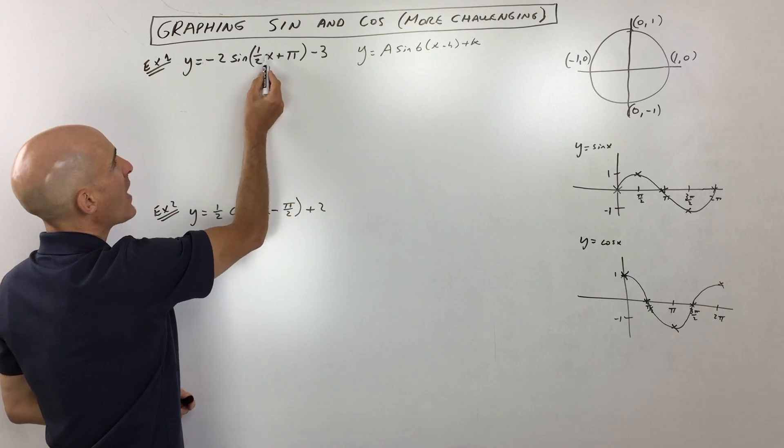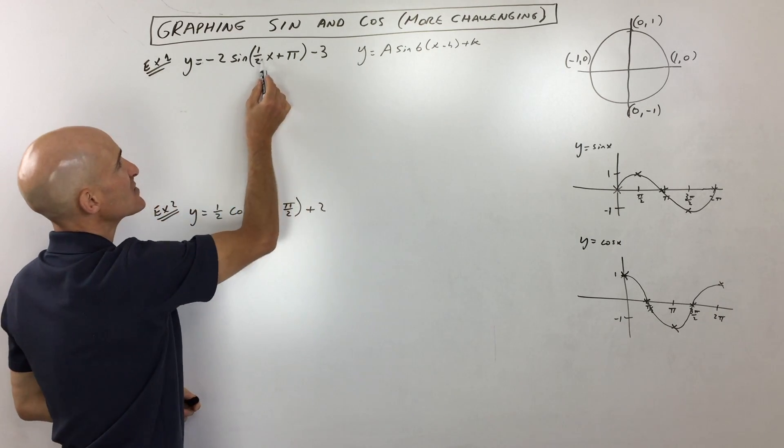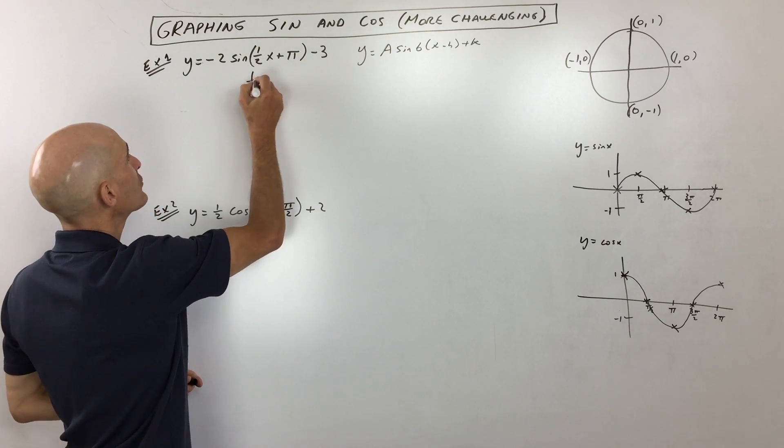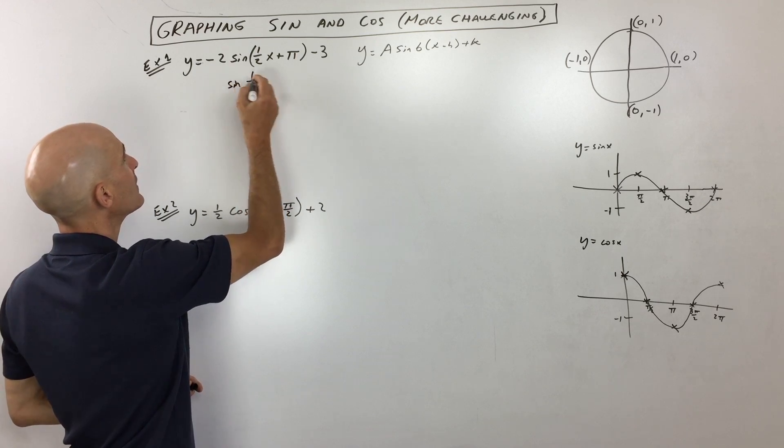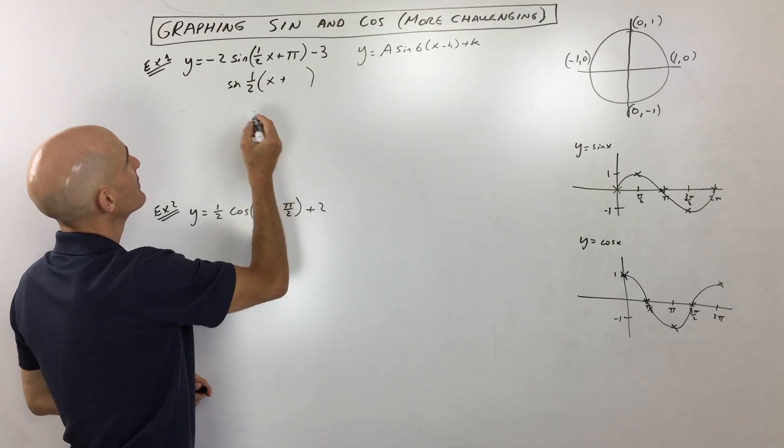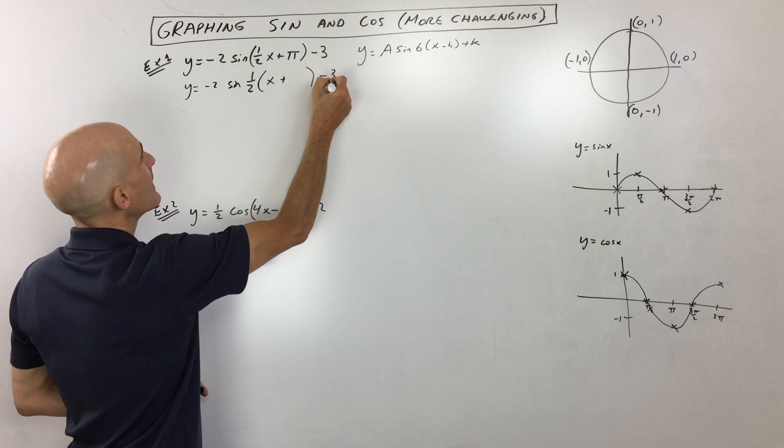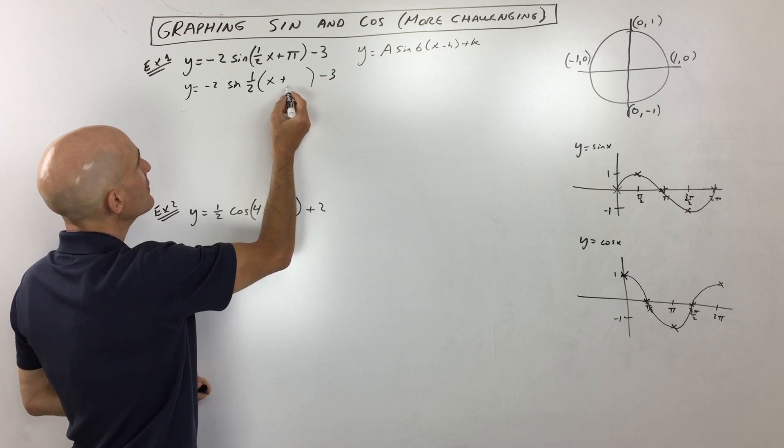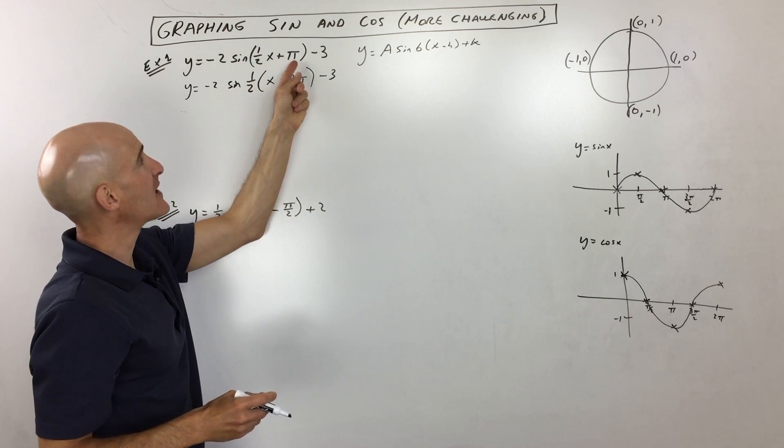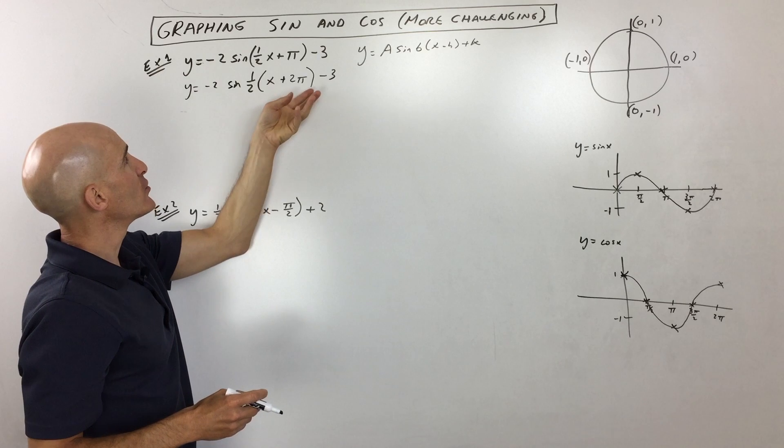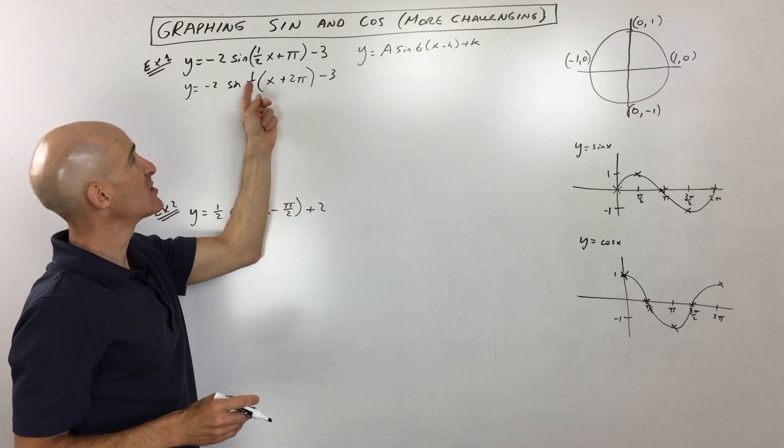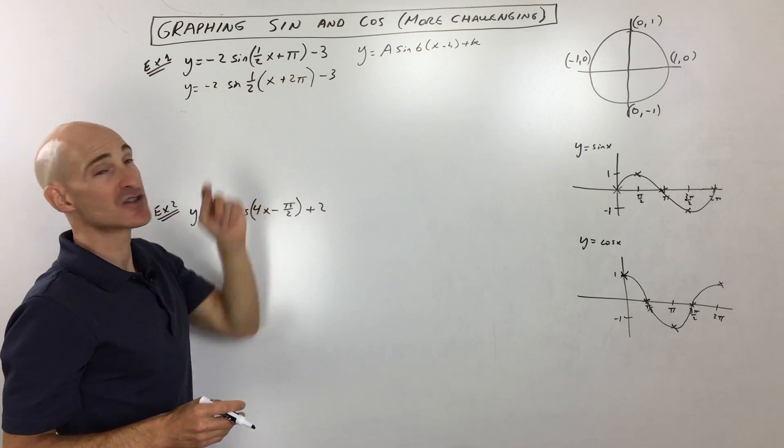But one thing you want to notice is you want just one x here inside of these parentheses, but see how there's that one half there? So we're going to factor out that one half. And this is where sometimes students make a simple error. What do you think this value is going to be right here? Well, this is going to be two pi. How do I know it's two pi? Well, if I distribute the one half times two pi, see how I get back pi? So you're factoring out one half, but you actually have to do the reciprocal, you actually have to multiply this by two. But you can double check your work. If you distribute, you can see you're getting this original quantity back.